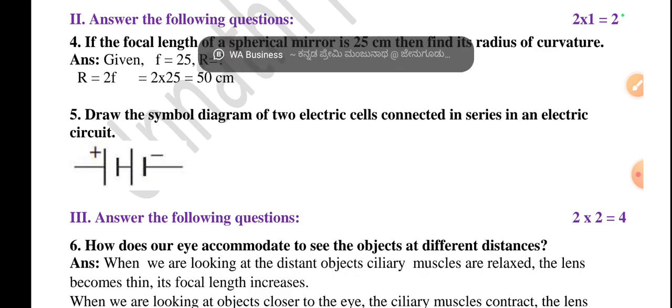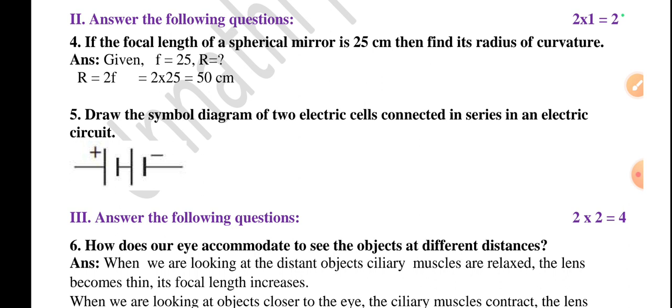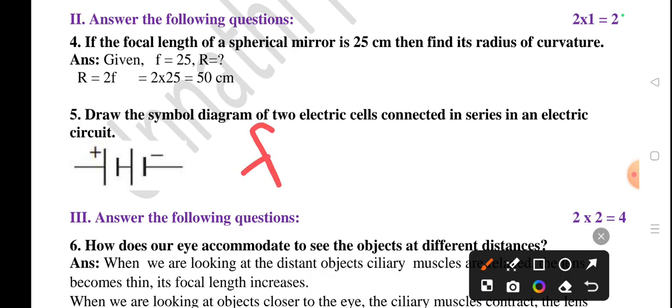Question number two section: Answer the following questions, each carrying one mark. Total two questions are there. If the focal length of a spherical mirror is 25 centimeter, then find the radius of curvature.